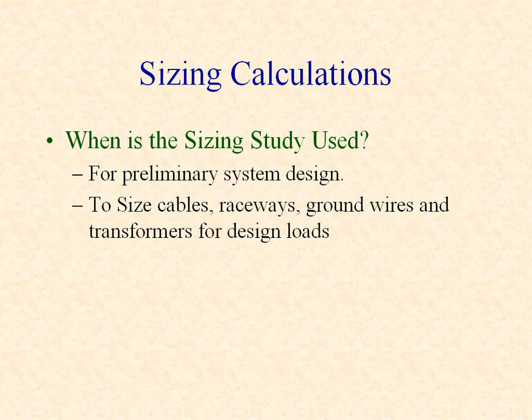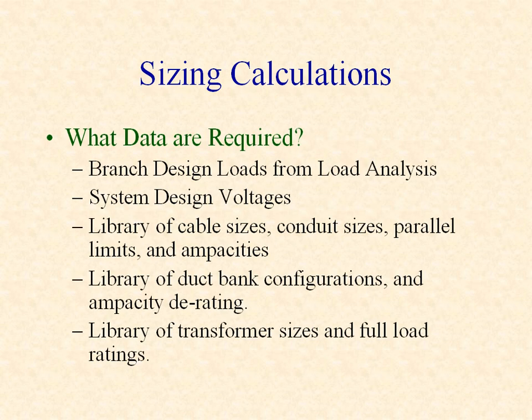A sizing study is typically used for preliminary system design. These preliminary calculations determine the size of cables, raceways, ground wires, and transformers based on the design load supplied by each branch. Sizing calculations require the total design load in each branch and the system design voltages. A library of cables with conduit sizes, the maximum number of parallel conductors for each size, and total ampacity is used to select the cable size. When multiple options meet the criteria, the final selection is based on a minimum conductor cross-sectional area.